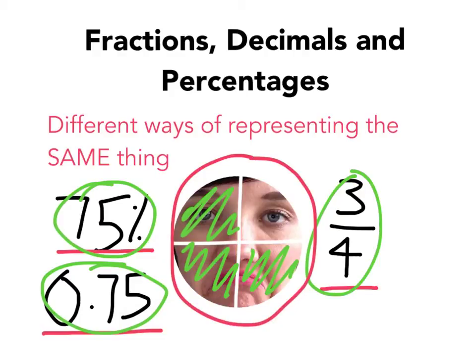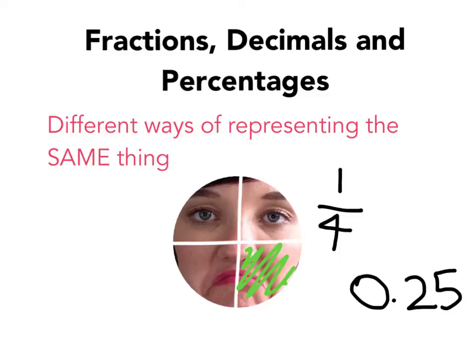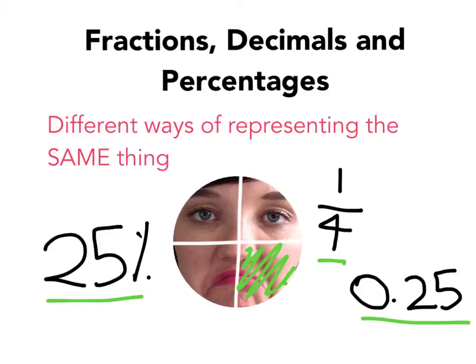I'll do another example for everyone playing at home. Say I only color in this one here. I'm working with small numbers at the moment just to get used to it. I have a quarter of my circle colored in. Or 0.25. Or 25%. Percentage. Fraction. Decimal. Three different ways of representing the same amount of my face colored in.